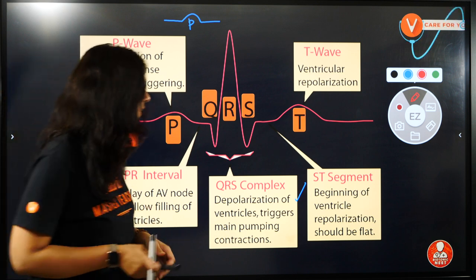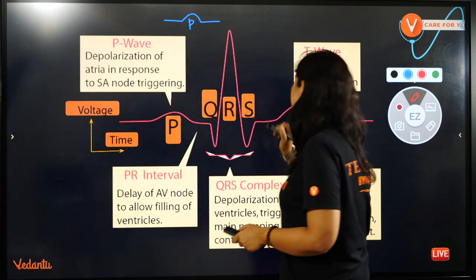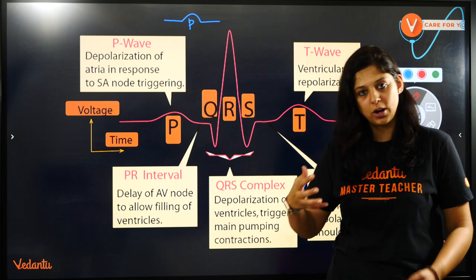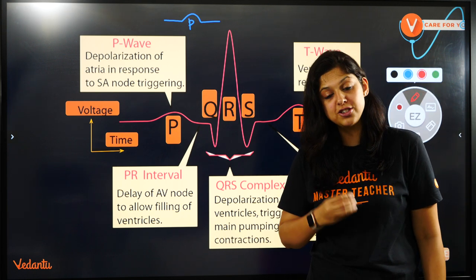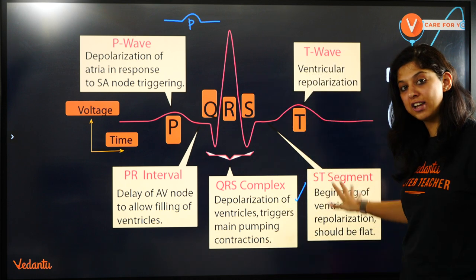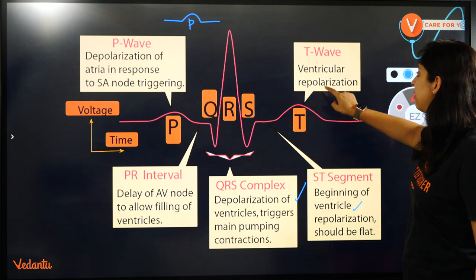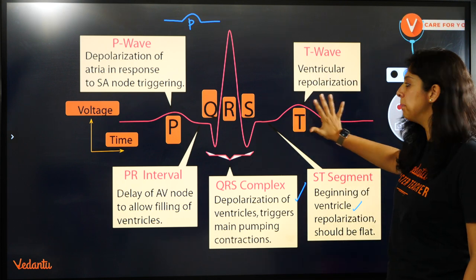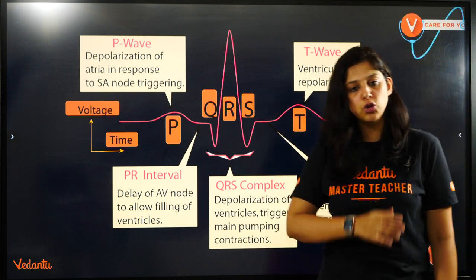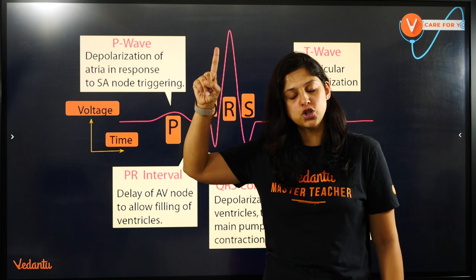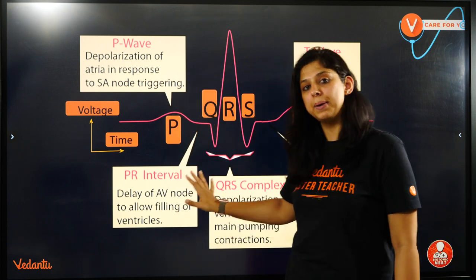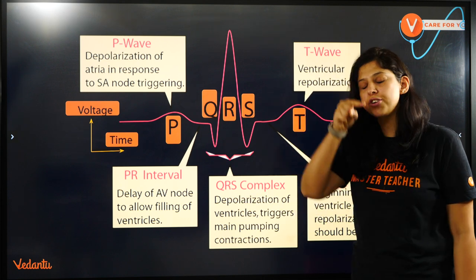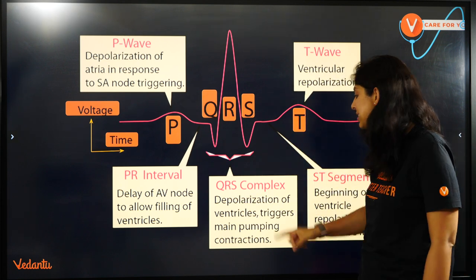The segment between S and T is called the ST segment. The ventricles begin to repolarize after contraction. Contraction occurs due to depolarization, and relaxation occurs due to repolarization, so that the ventricles can be filled again. The T wave represents ventricular repolarization — the ventricles are completely relaxing. So: P wave is depolarization of the atria when they contract; PR interval is the delay at the AV node to allow filling of the ventricles after the atria contract.